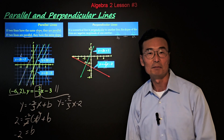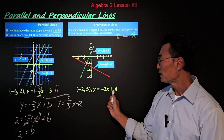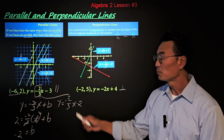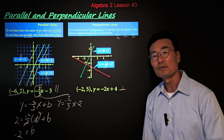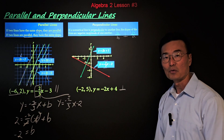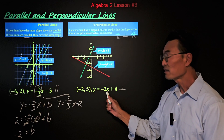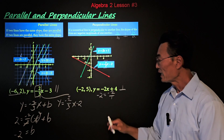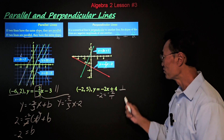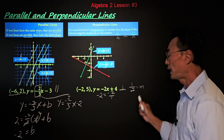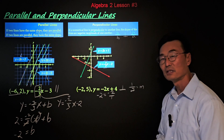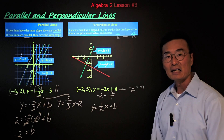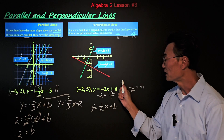Let's use this in a problem. Given y equals negative 2x plus 4, we want to find the equation of a line that's perpendicular to this line and contains the point negative 2 comma 5. The slope of the given line is negative 2, which we rewrite as negative 2 over 1. The negative reciprocal of negative 2 over 1 is 1 half, so the slope of the new perpendicular line is 1 half. We begin with y equals 1 half x plus b.